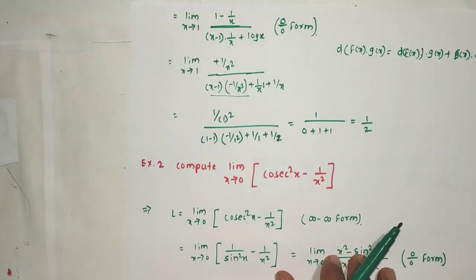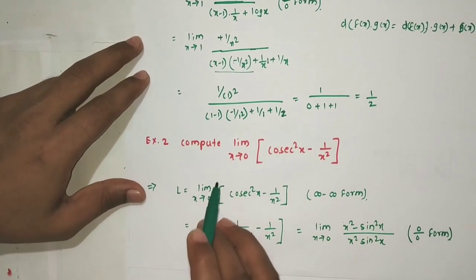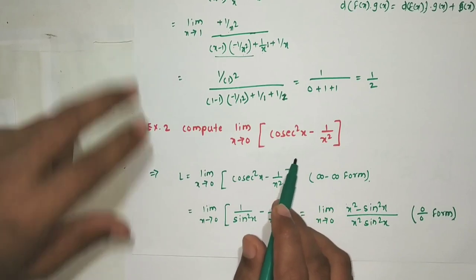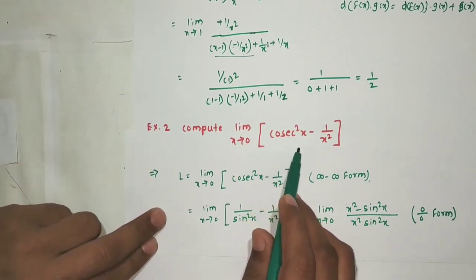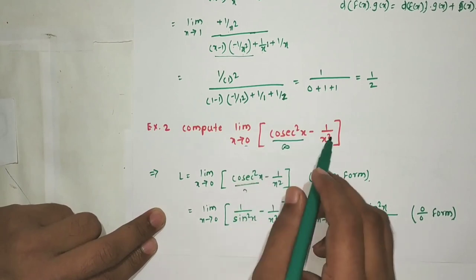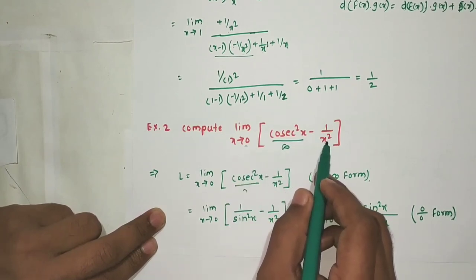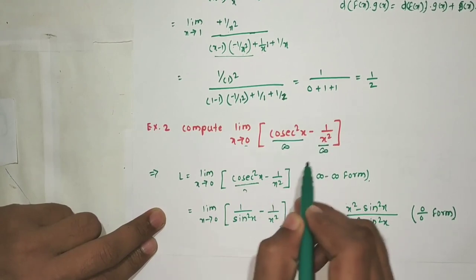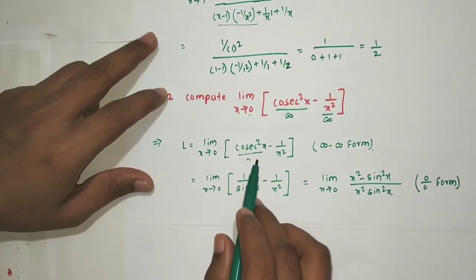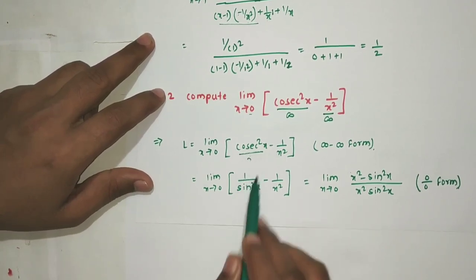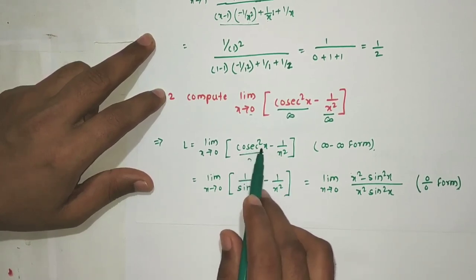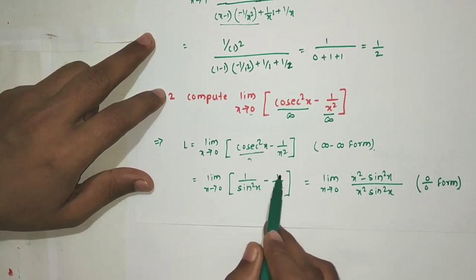Next problem: compute limit x tending to 0 of [csc²x - 1/x²]. As x→0, csc²(0) = infinity and 1/0² = infinity, so this is the infinity minus infinity form. We use the identity csc²x = 1/sin²x, so the expression becomes [1/sin²x - 1/x²].